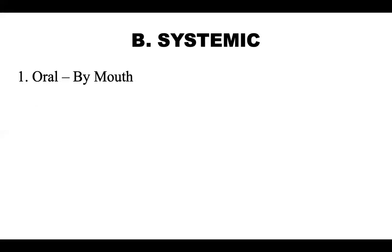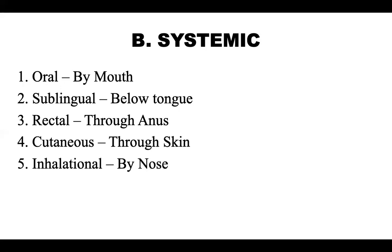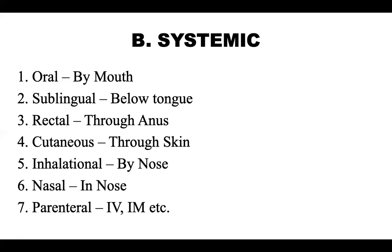For systemic routes: the first is oral, the second is sublingual, the third is rectal, the fourth is cutaneous, the fifth is inhalation by nose, the sixth is nasal, and the seventh is parenteral — meaning through intravenous or intramuscular routes. So these were the two main categories: systemic and local routes.